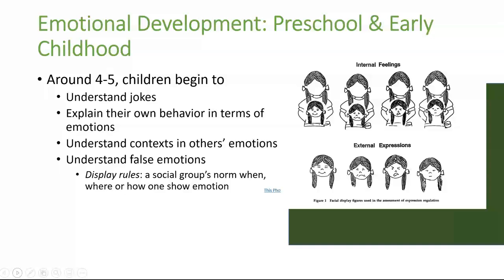Children also begin to understand false emotions, which entail expressing emotions that are not actually being felt. For instance, by the age of five, children will pretend that they like a gift even if they don't. They also recognize that others can mask their own emotions. This might be because children learn about display rules, or norms of when, where, or how one should show emotion. While basic emotions are thought to be universal, how appropriate it is to show a particular emotion in public differs across cultures.